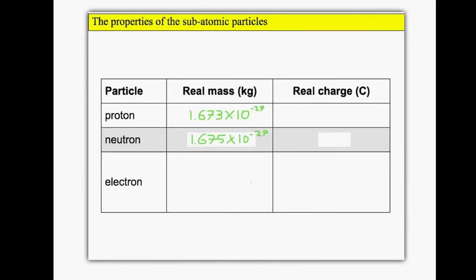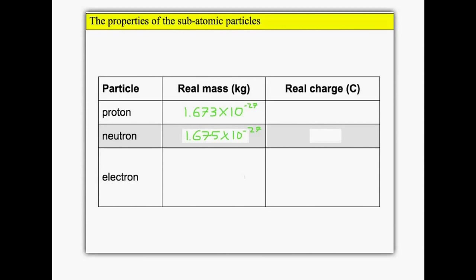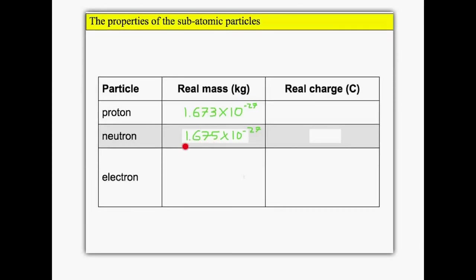You'll be expected to remember the relative mass and relative charge. You're not expected to remember the real mass and the real charge, but here they are for interest. The proton is 1.673 times 10 to the minus 27 kilos. A neutron is pretty much similar, a tiny bit heavier, but pretty much similar.